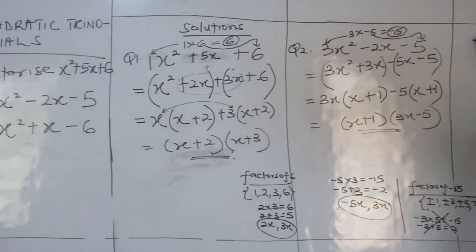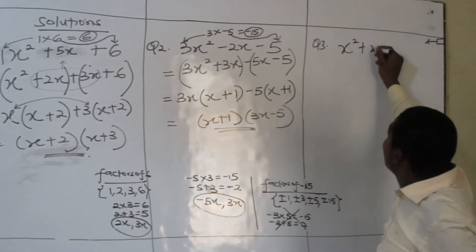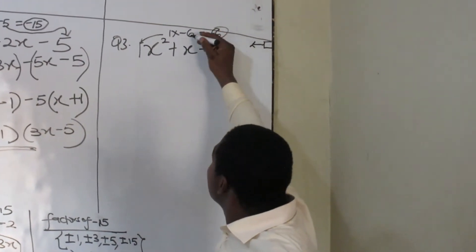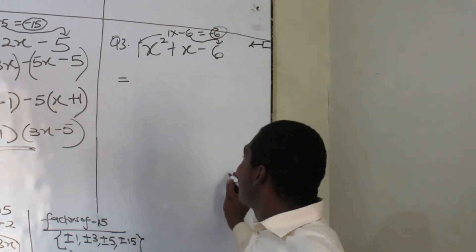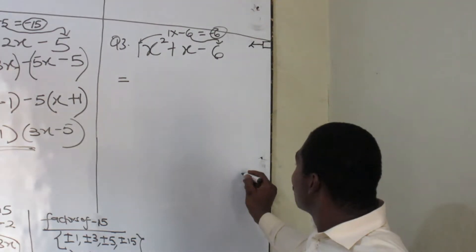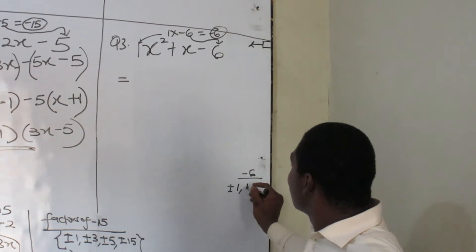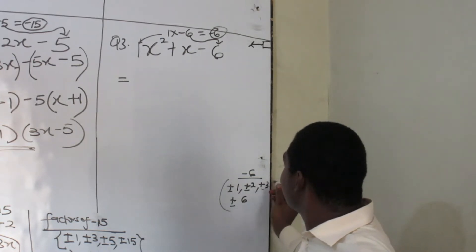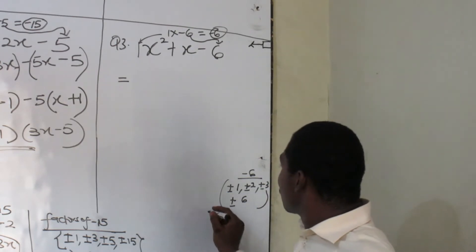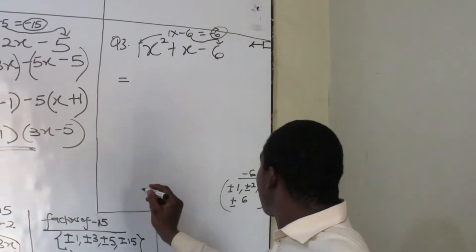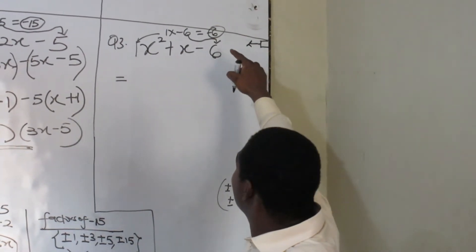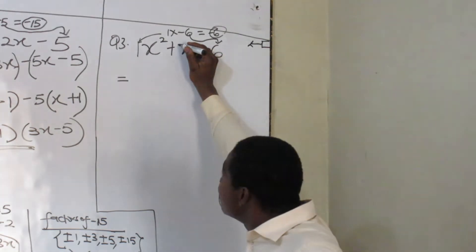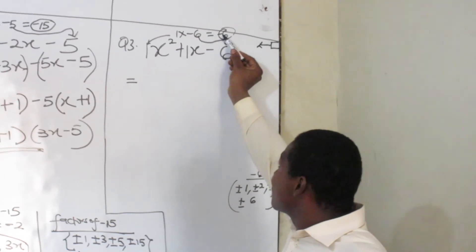The third one: x squared plus x minus 6. As usual, there can be a coefficient here. So there is 1 by minus 6, that will produce minus 6. I will still test my factors: plus or minus 1, plus or minus 2, plus or minus 3, plus or minus 6. So these are the factors to be used. Two numbers — I multiply and get minus 6, but when I add I get 1. How do you know there is 1 here? You can't add and get x — there is a coefficient here, secretly, that is 1. Two numbers: I multiply and get minus 6, I add and get 1.